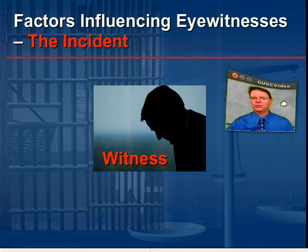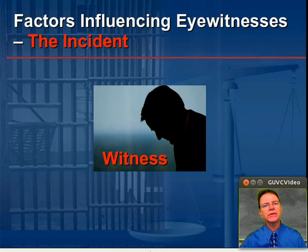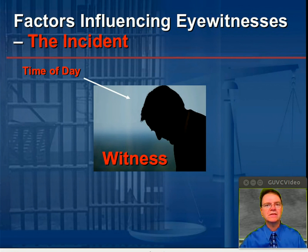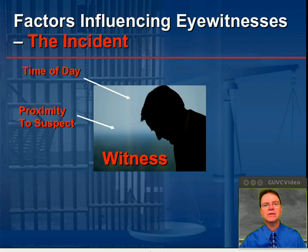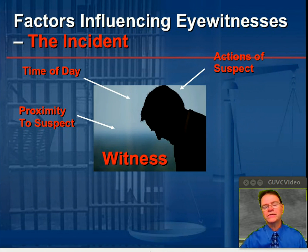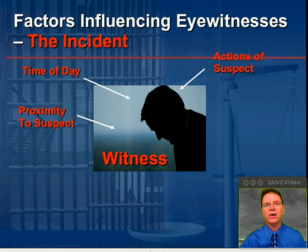What are some factors that would influence an eyewitness, particularly with respect to the incident itself? The time of day — in other words, was there sufficient light for that witness to see the suspect in the commission of a crime? Also, the proximity or closeness of the witness to the suspect. Were they standing within 10 or 20 feet? Were they standing next to the perpetrator, or were they at a distance? Also, the actions of the suspect — things which the witness tends to remember better, because we tend to look at the actions of a person rather than, for example, what they're carrying in their hand.